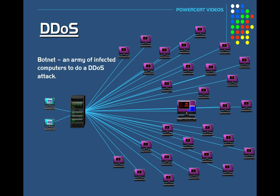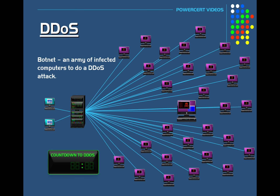This botnet is not just limited to a few computers — it could be hundreds or even thousands of computers scattered all over the world. The botnet can be controlled like an army waiting to receive instructions from the attacker, who acts as a centralized command and control center. The attacker can send out commands to all these computers telling them to attack at a certain date and time, and once that set time is reached, the attack begins.